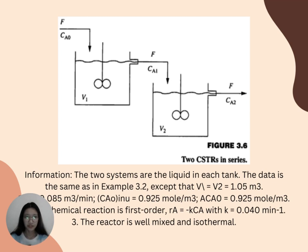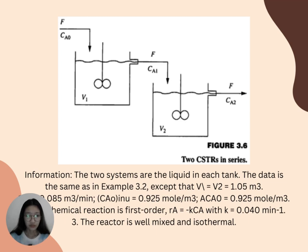Page 8 is Figure 3.6, two CSTRs in series. The two systems are the liquid in each tank. The data is the same as in Example 3.2, except that V1 equals V2 equals 1.05 cubic meters.